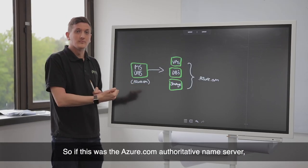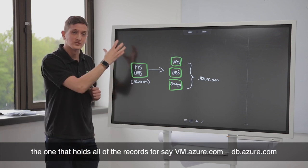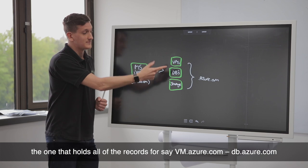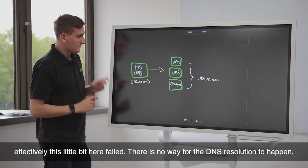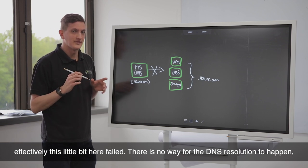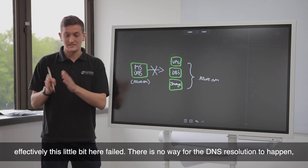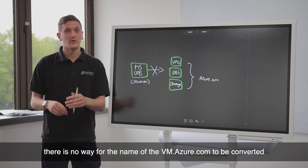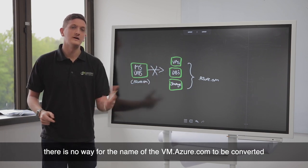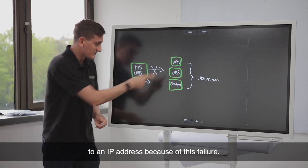So if this was the azure.com authoritative name server, the one that holds all of the records for, say, vms.azure.com, dbs.azure.com, effectively what happened is this little bit here failed. There was no way for the DNS resolution to happen. There was no way for the name of vms.azure.com to be converted to an IP address because of this failure.